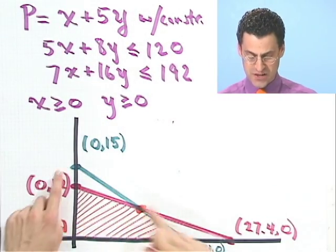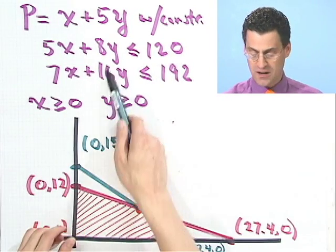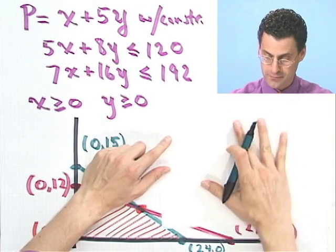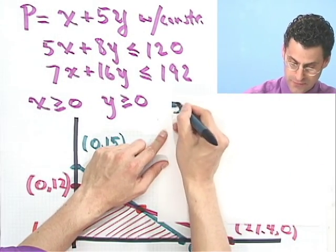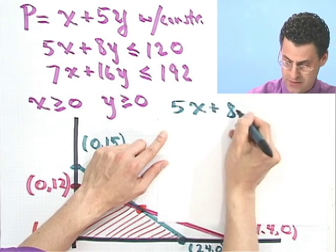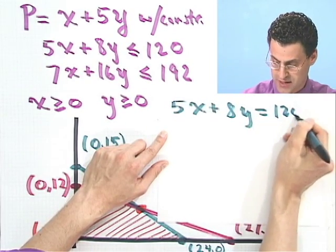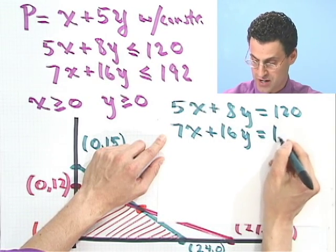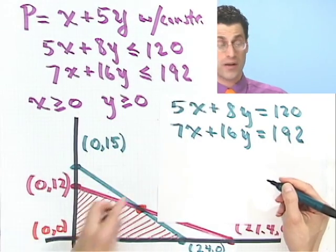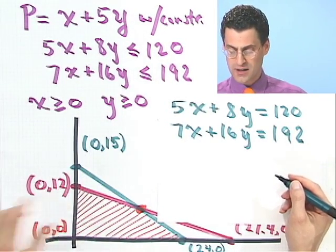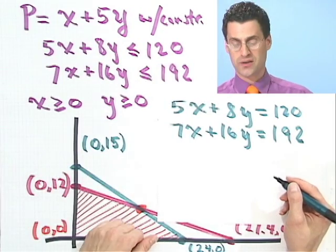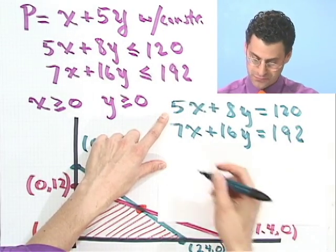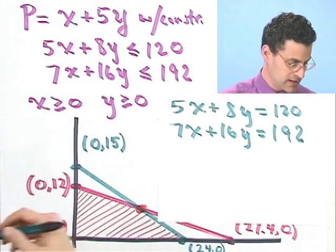One thing I need is to find the intersection of those two lines. So I've got to actually solve these two equations: 5x + 8y = 120, and then 7x + 16y = 192. I have to solve them using any kind of method you want. One thing you can do, for example, is multiply this equation through by 2. If I did that, I would see 10x + 16y = 240.